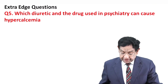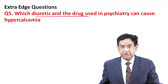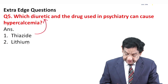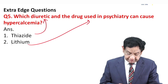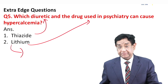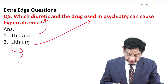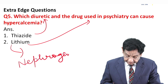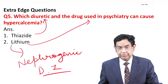Which diuretic and psychiatric drug can cause hypercalcemia? — A very frequently asked question. The answer is thiazide diuretics and lithium. Additionally, lithium can lead to nephrogenic diabetes insipidus, which is one reason it can cause polyuria.